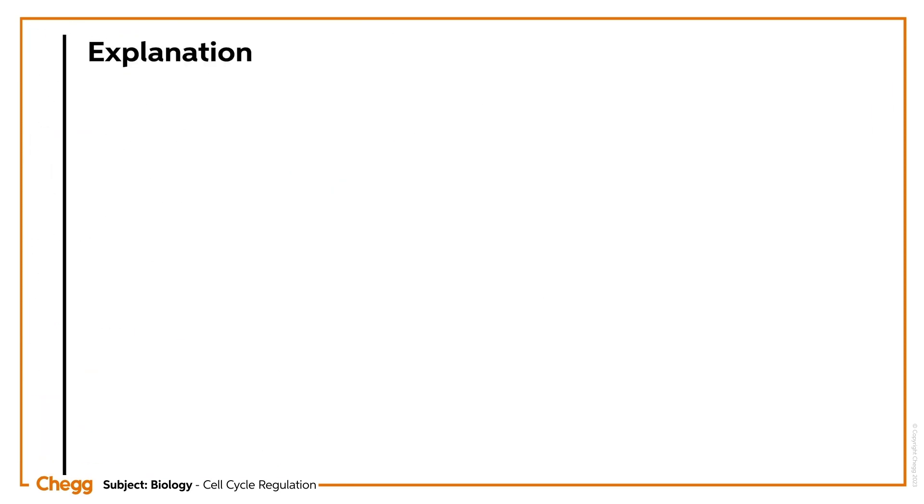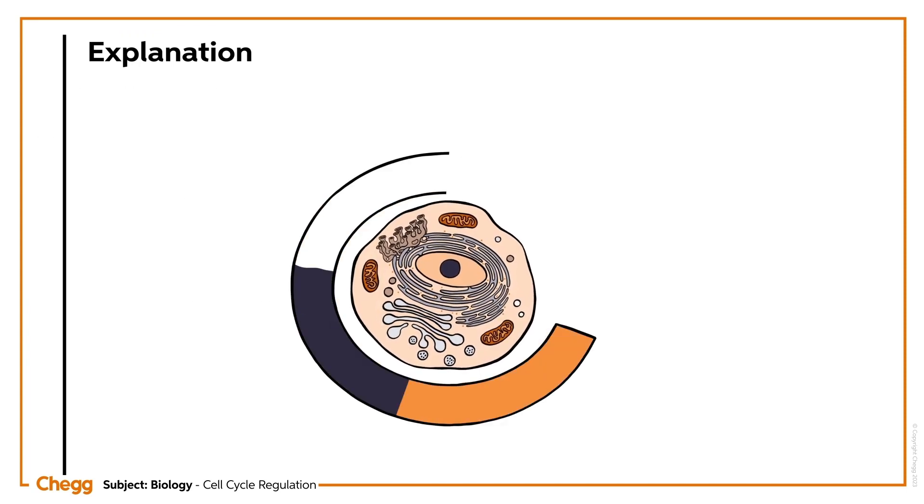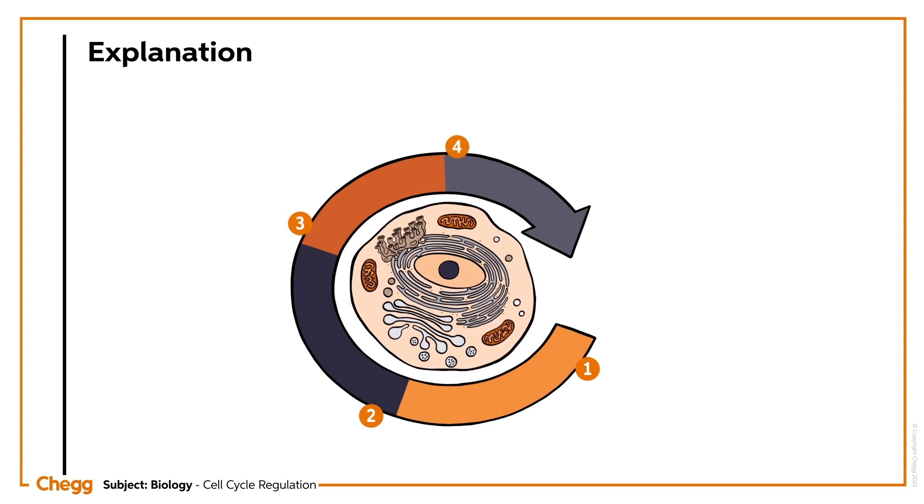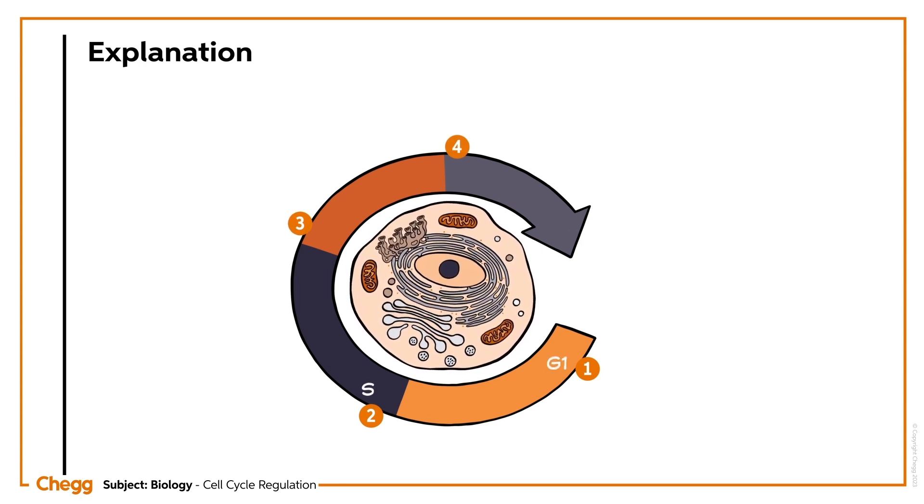Let's begin with understanding how a healthy cell undergoes division. A typical cell cycle is divided into four major phases: G1 phase, S phase, G2 phase, and M phase.